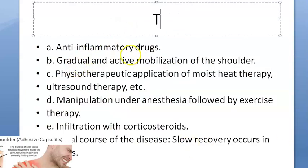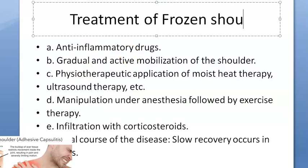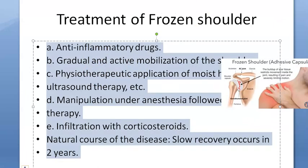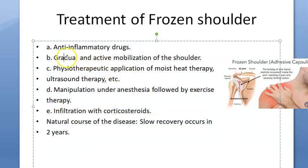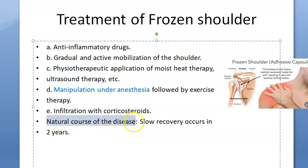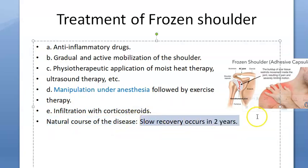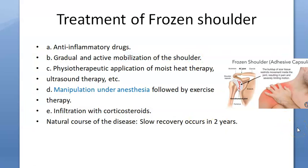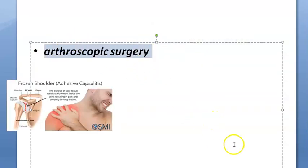Summarizing the treatment: anti-inflammatory drugs and analgesics can be given. NSAIDs, gradual and active mobilization of the shoulder, exercise, physiotherapy, heat therapy, and ultrasound therapy are used. Manipulation under anesthesia followed by exercise therapy is also an option. Infiltration with corticosteroids is another option. The natural course of the disease is slow recovery in about two years. Pain may go but stiffness may not, so patients must keep exercising and mobilizing. Arthroscopic surgery can also be done.